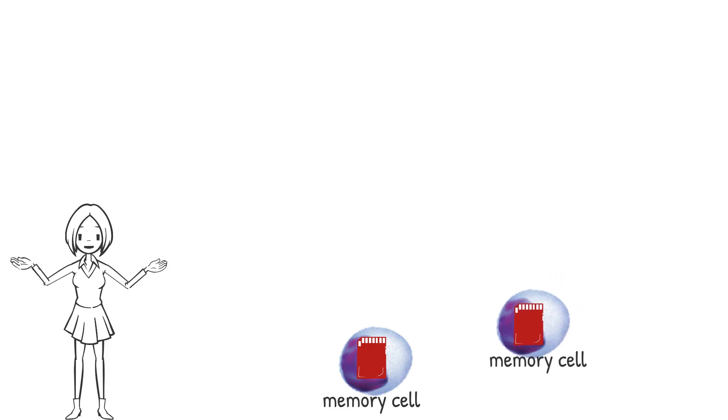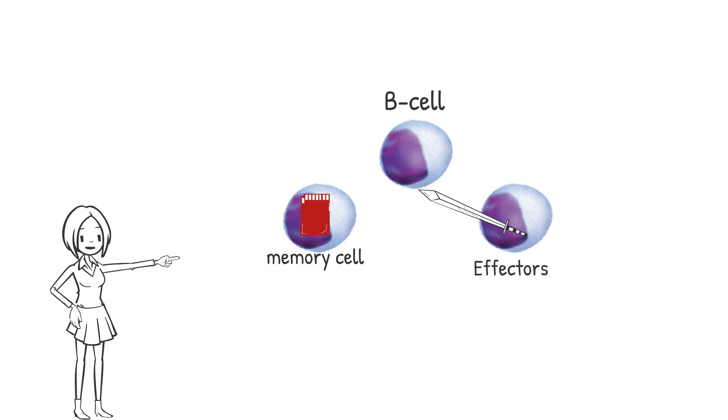Memory cells live longer and are ready to run the same fight if the same invader enters the body. We call it secondary exposure. And this is the basic logic of vaccination. The function of B cells in production of antibody and keeping the memory of enemy is our humoral immune system.